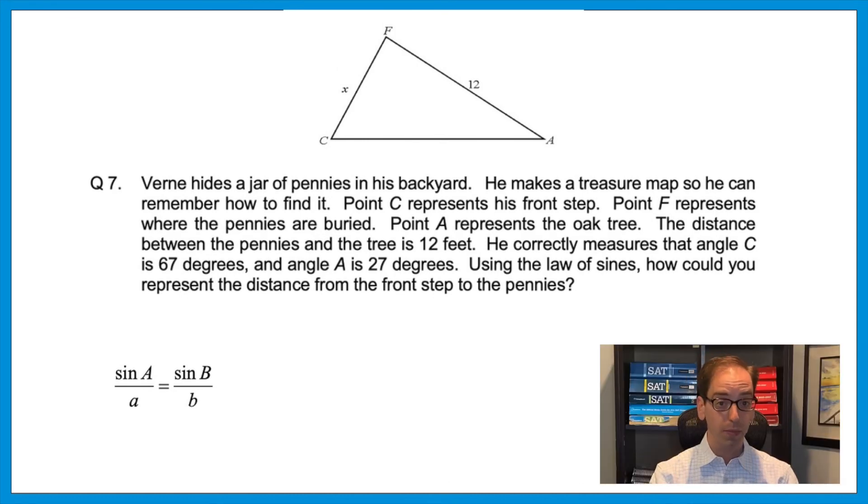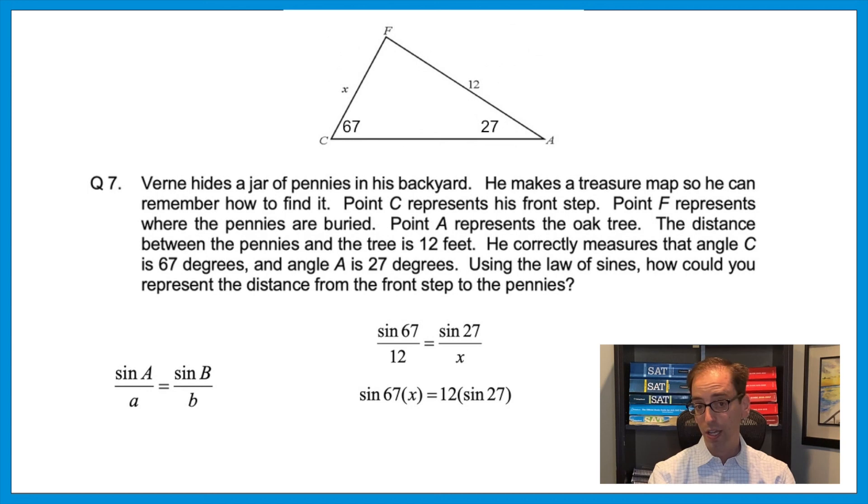So let's start by labeling the angle measurements that they tell us. C is 67 and A is 27. And now think about what sides are corresponding to those angles. That 12 corresponds to the 67, and the x corresponds to the 27. So using the law of sines, we could say sine of 67 over 12 equals the sine of 27 over x. From there, cross multiply. Sine of 67 times x equals 12 times the sine of 27. And now they just want x. To get it by itself, divide the sine of 67 to the other side. x equals 12 times the sine of 27 divided by the sine of 67. And that's the answer.